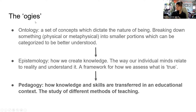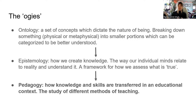This framework — the OGs. Ontology is basically a set of concepts that dictate the nature of being — how we break down physical or metaphysical concepts into smaller portions we can categorize to better understand them. Epistemology is how we create knowledge: the way our individual minds relate to reality. It's a framework for how we as individuals interpret and assess what is true. My epistemology may differ from someone else's, and different cultures have different epistemologies.